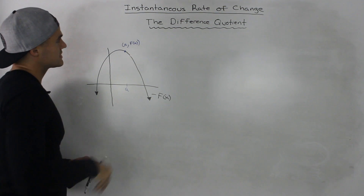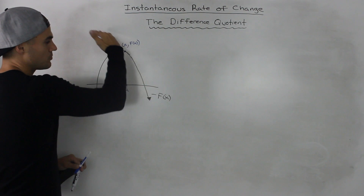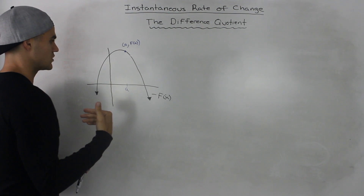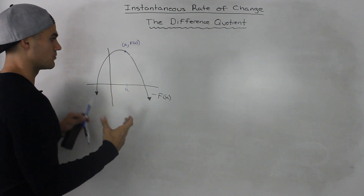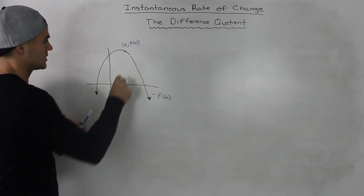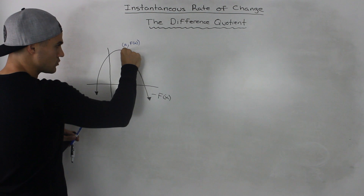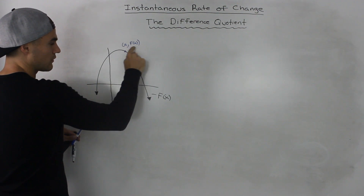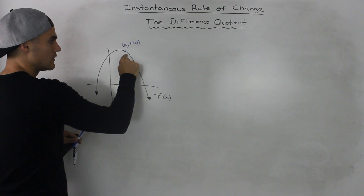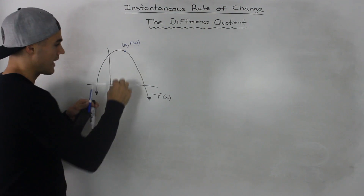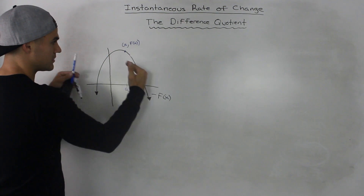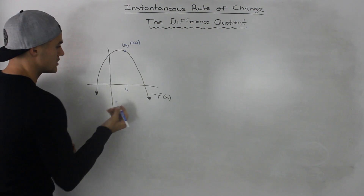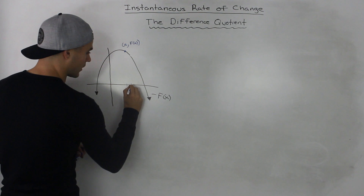So to find the instantaneous rate of change, we're trying to find the slope of the tangent at that point. As we mentioned in videos before, a good way to approximate the slope of the tangent is to find a point that's very close to the point where we want to find the instantaneous rate of change, and then find the slope between those two points — that gives us a good approximation of the tangent.